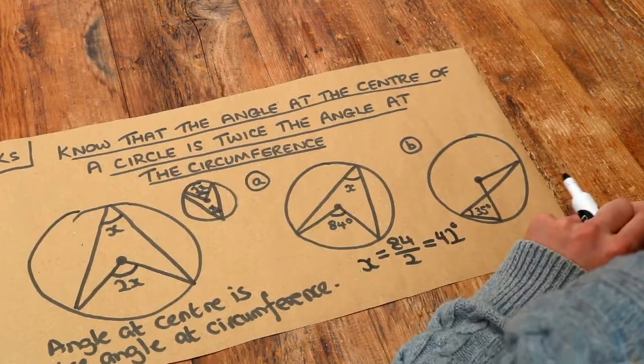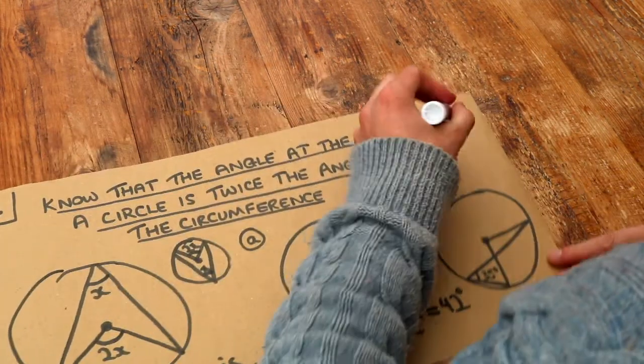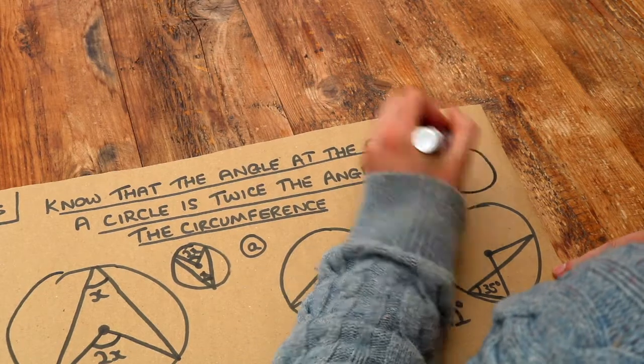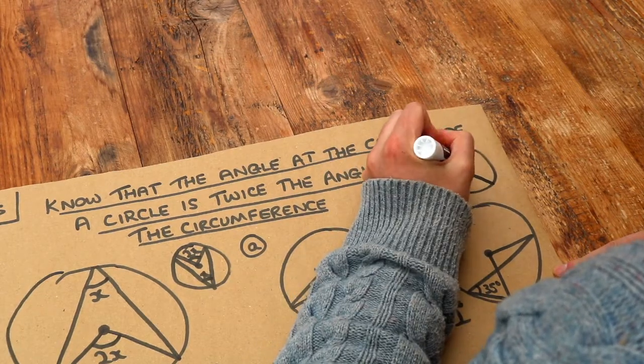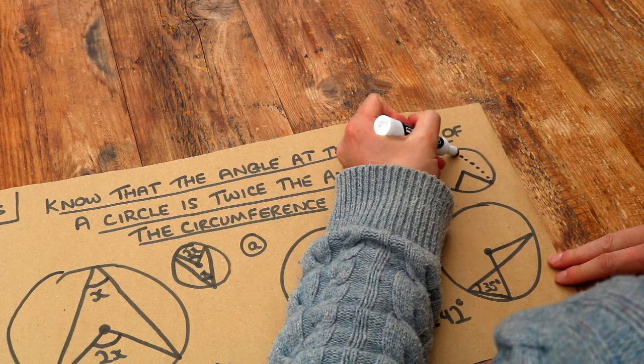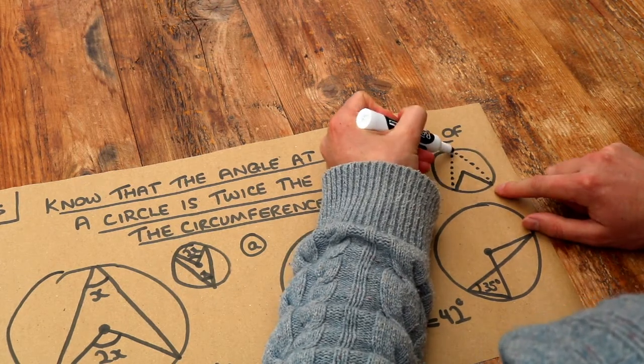This one is a bit more confusing. But note that if you have the angle at the centre, the angle at the circumference could come out like this from the end of the line.